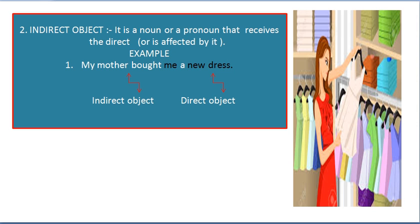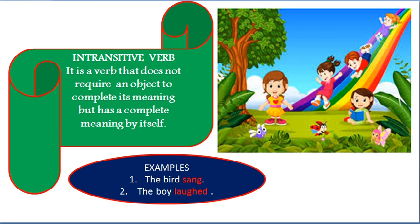The indirect object is the noun or pronoun that receives the direct object or is affected by it. For example, 'My mother bought me a new dress.' Here, 'me' is the indirect object and 'new dress' is the direct object. The dress was bought for me — so 'me' is the indirect object. To summarize: a transitive verb must have an object, and that object can be direct or indirect.